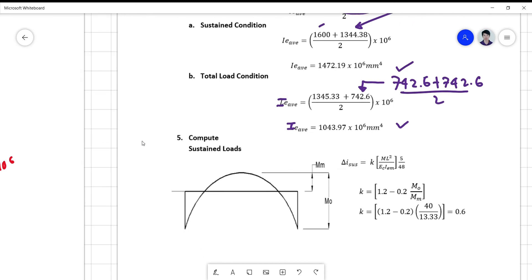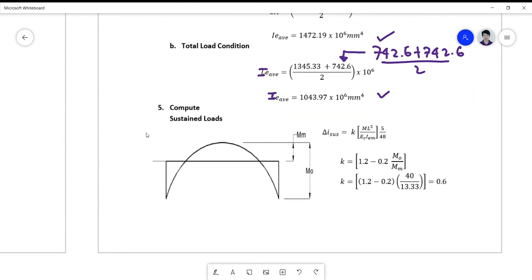After which, you may now compute for the deflection due to sustained loads and due to total loads. But before we do that, there's another thing we would like to add up to the solution as compared to the first problem. The value of K is no longer 1. Your K is 1 for simply supported, but since this is not simply supported, this is your K value for continuous beams.